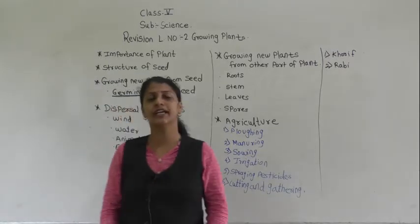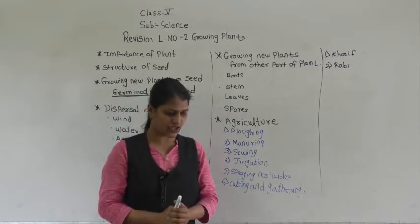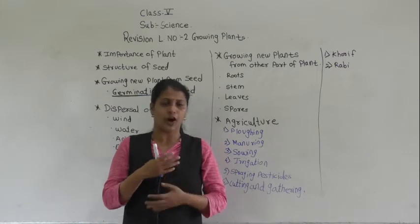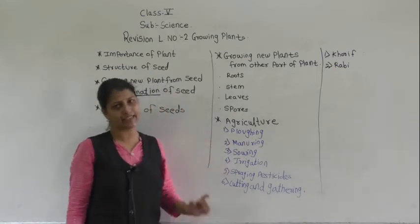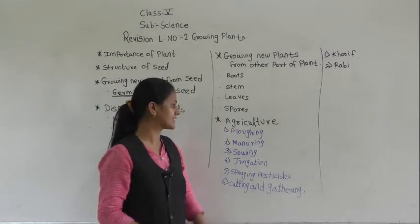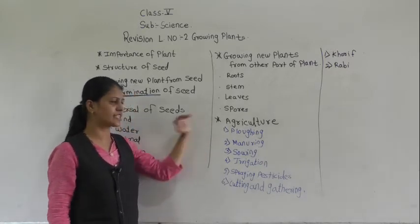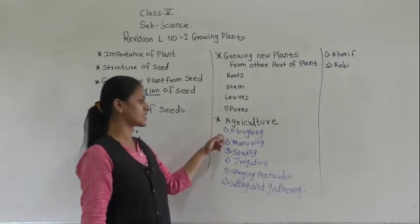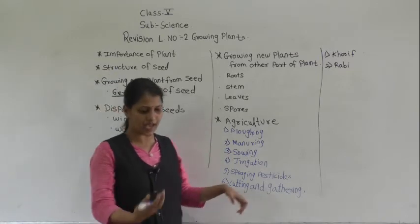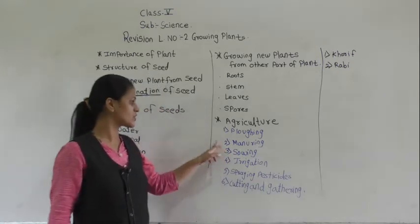Then we discussed agriculture. What is meant by agriculture? The mass production of plants for food is called agriculture. How is agriculture done? There are six methods. First is plowing — digging or loosening the soil. Second is manuring — adding nutrients to the soil.